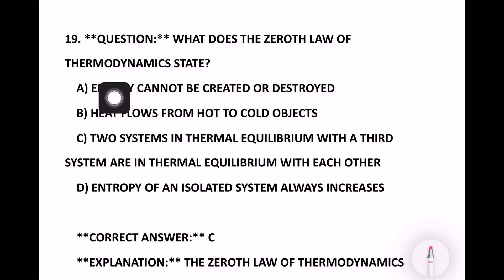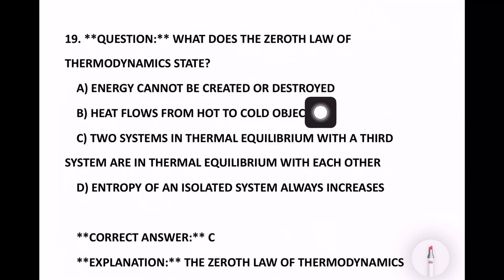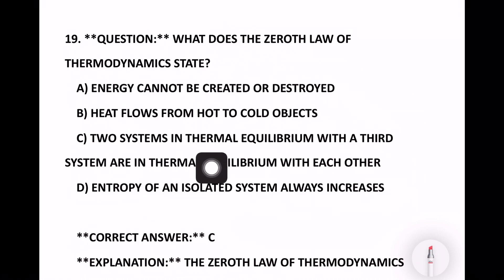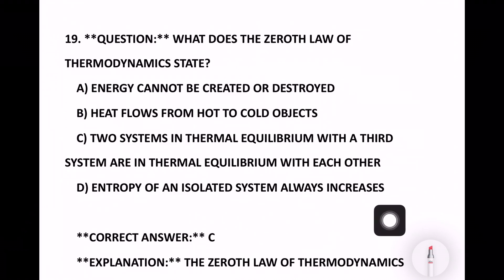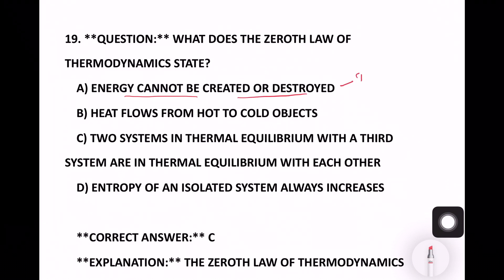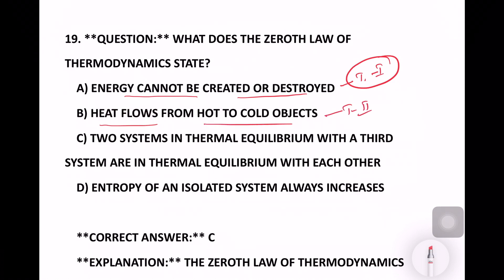What does the zeroth law of thermodynamics state? The options are: energy cannot be created or destroyed; heat flows from hot to cold object; two systems in thermal equilibrium with a third system are in thermal equilibrium with each other; entropy of an isolated system always increases. Energy cannot be created or destroyed is the first law. Heat flow from hot to cold is the second law.